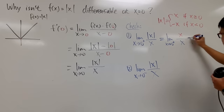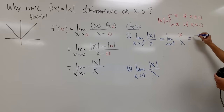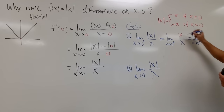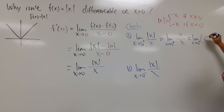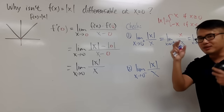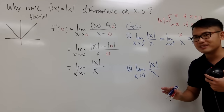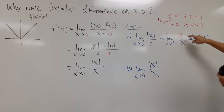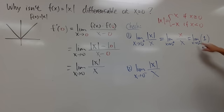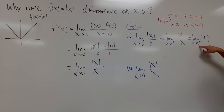Now we reduce this. This is the limit as x approaches 0 plus of x over x, which is 1. Notice I reduced the x and x first — not plugging in 0, which would give 0 over 0. After reducing, we take the limit of 1 as x approaches 0 plus, which is just 1.